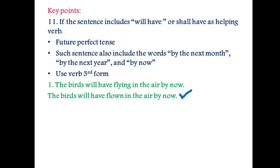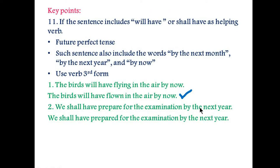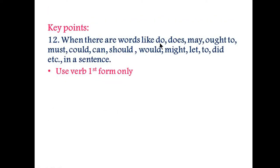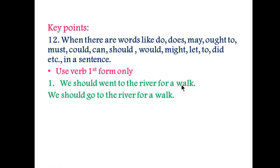The next example: 'We shall have prepared for the examination by the next year' — using the verb third form — is correct. Key point number twelve: when there are modal words like 'do', 'does', 'may', 'go', 'must', 'can', 'should', 'would', 'might', 'let', 'did', etc. in any sentence, you will use the verb first form after these words. For example, 'We should went to the river for a walk' is incorrect. 'We should go to the river for a walk' is correct — you use the verb first form after 'should'.